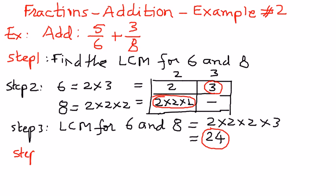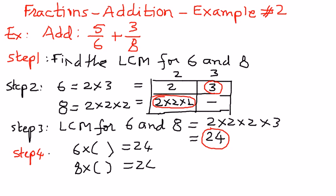Step number 4: we're going to take the denominator of the first fraction and say, 6 times what number is equal to 24? And then we look at the second fraction — the denominator there is 8 — and say, 8 times what number is equal to 24? So, 6 times 4 is equal to 24, and 8 times 3 is equal to 24.